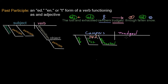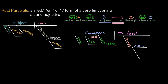Then we have a prepositional phrase: 'through fallen snow.' The preposition is 'through,' 'snow' is the object of the preposition — which is a noun — and 'fallen' will be our past participle. This prepositional phrase is functioning adverbially, modifying 'trudged.' Trudged where? Through fallen snow. Snow is the object of the preposition — a noun. 'Fallen' is our past participle modifying 'snow.' Which snow? The fallen snow.